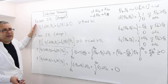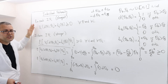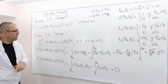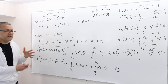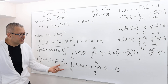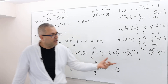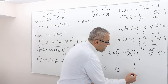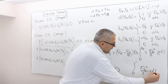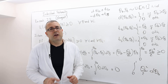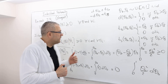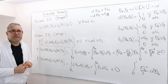Since ex-post IR implies interim IR, this is expected. I won't calculate the ex-ante IR constraints, but you can do it yourself: for the seller it's always zero, and for the buyer it's the integral from 0 to 1 of θ_B²/2 dθ_B, which is positive. That's how we calculate interim, ex-ante, and ex-post individual rationality.